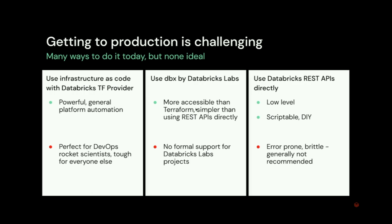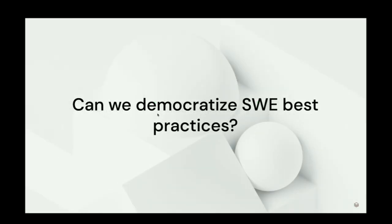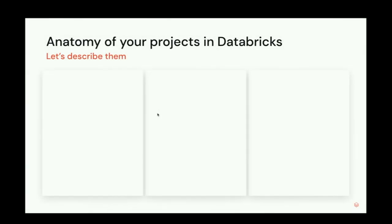The last option is you could just go hit the Databricks REST APIs directly. This is very low level and scriptable, but we really don't recommend this because it's a lot of work and it's error-prone — probably not going to be the fun that you would imagine it to be. So the question is, can we democratize these best practices? Before we can get to that, we have to take a closer look at the structure of a project that you build in Databricks and how we get these things into production.